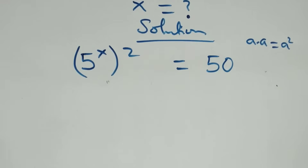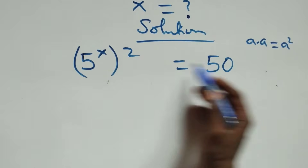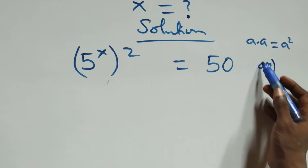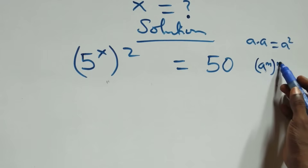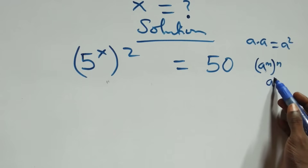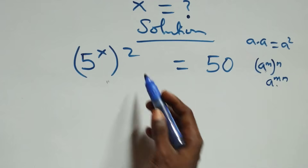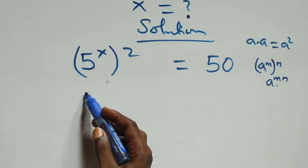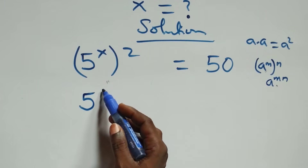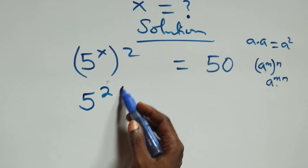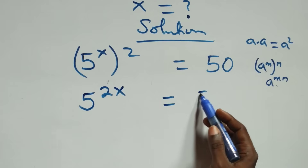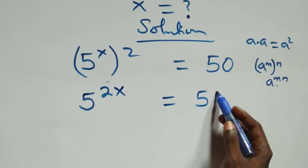The next step here: this follows since we have a raised to power n, raised to power n, which is the same thing as a raised to power n squared. So this becomes 5 raised to power 2x equals to 50.